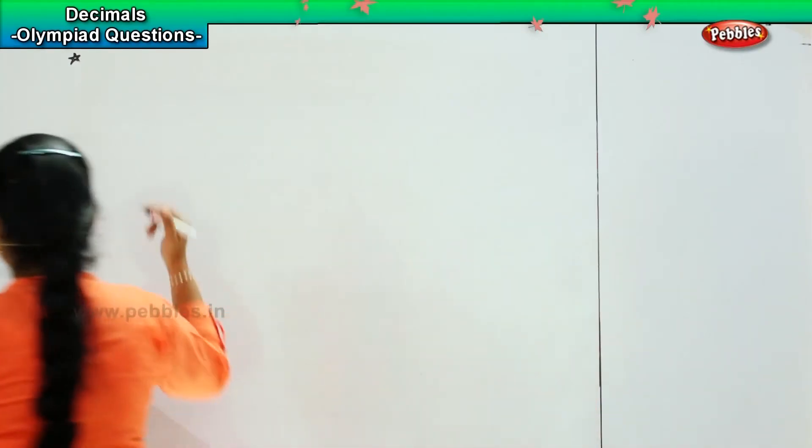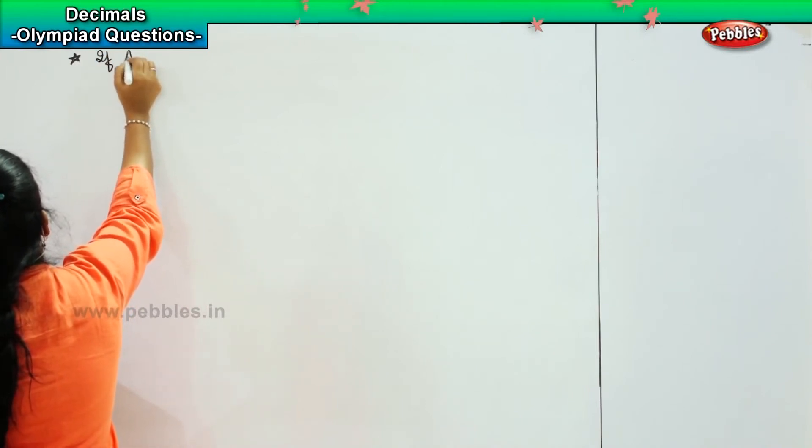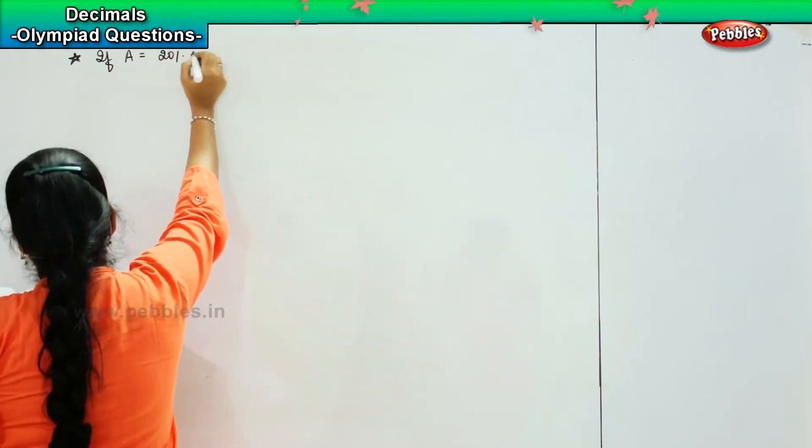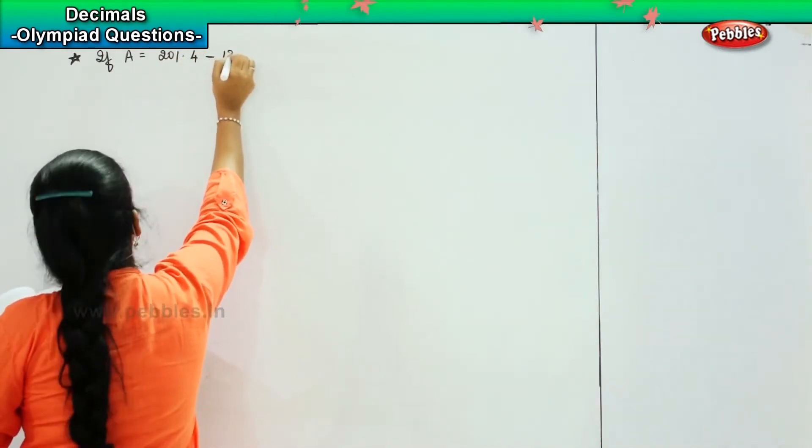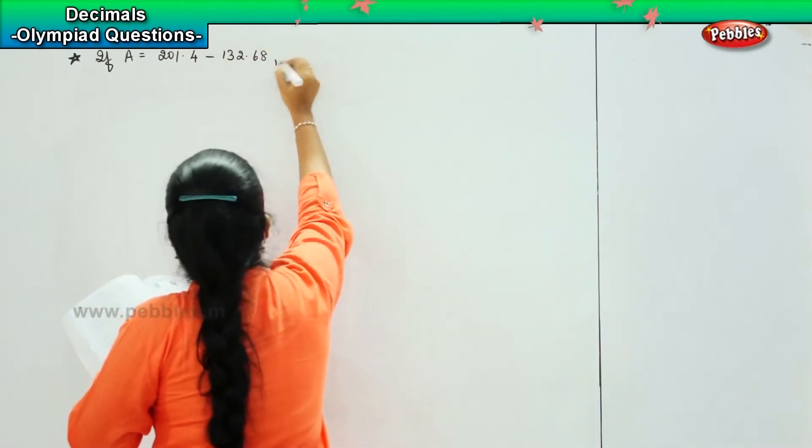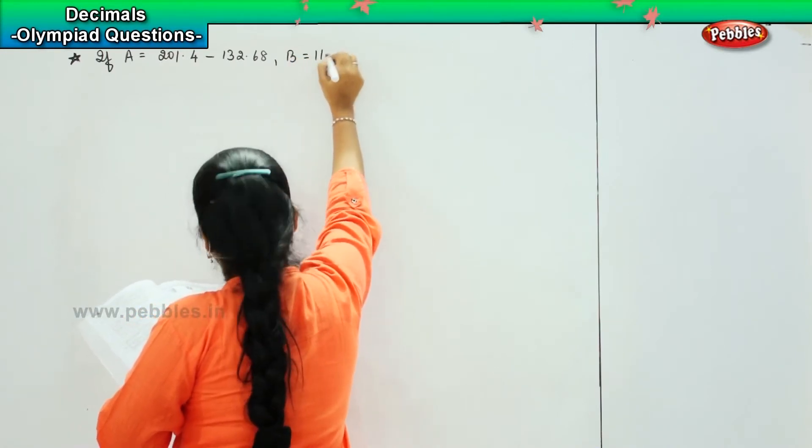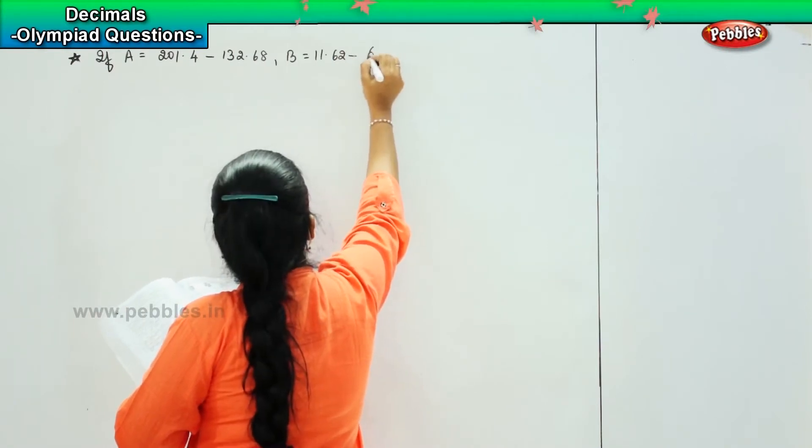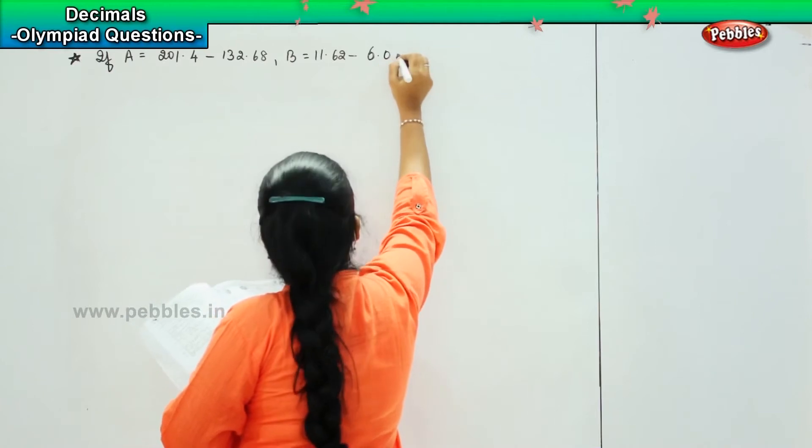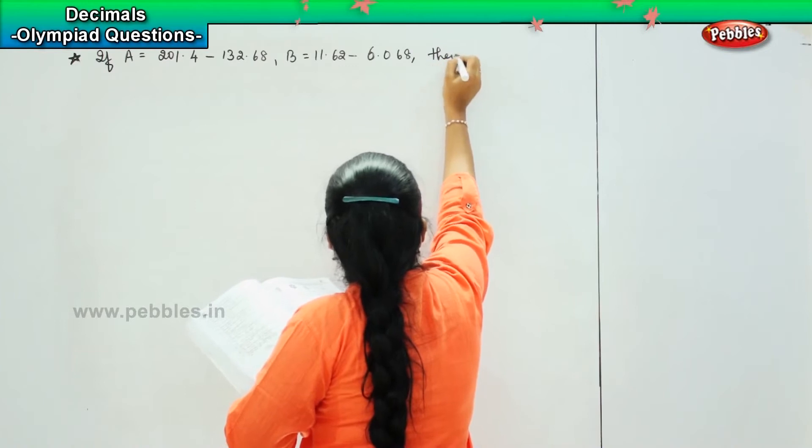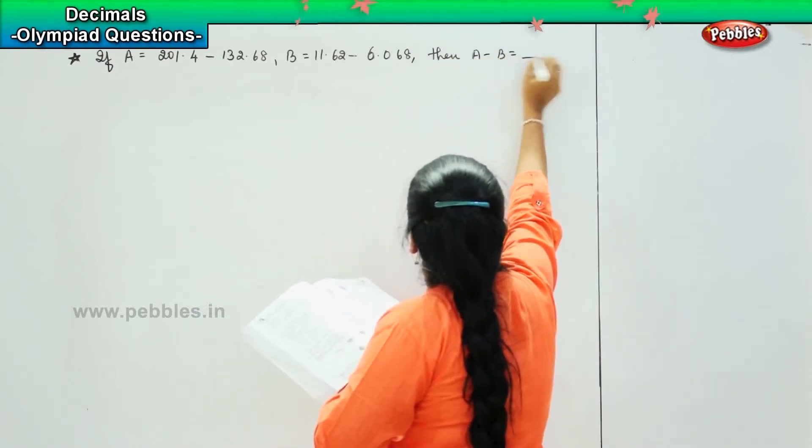The next question is, if A is equal to 201.4 minus 132.68, B is equal to 11.62 minus 6.068, then A minus B is equal to what?